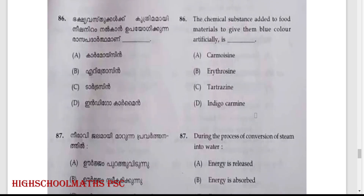The chemical substance added to food materials to give them blue color — prakashavastukkalku kritrima mayi neelaniram nalga upayogikkunna rasa padartham — indigo carmine. Option D: indigo carmine.